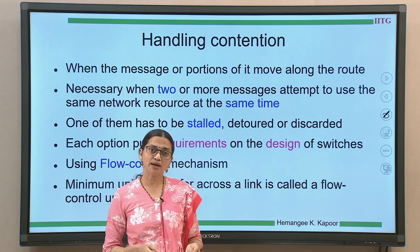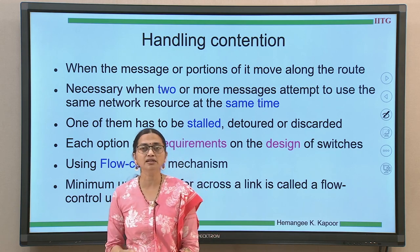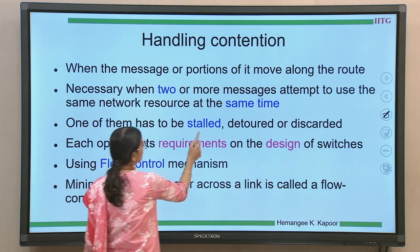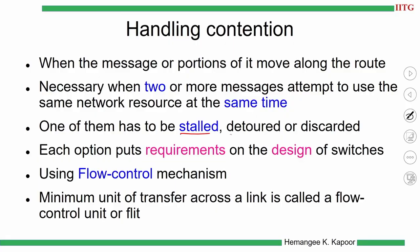When contention happens, the solution is similar to two people wanting to pass through the same door with capacity for only one. Either one packet has to stall, meaning stop; you have to detour it through another path; or simply discard it. All the ideas to reduce or solve contention come under the topic of flow control.